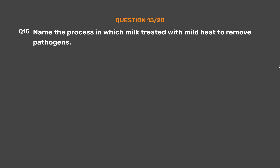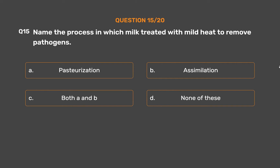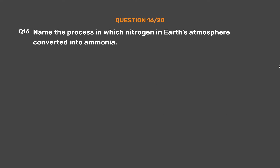Question number 15. Name the process in which milk is treated with mild heat to remove pathogens. Option A: Pasteurization. Option B: Assimilation. Option C: Both A and B. Option D: None of these. The correct answer is Option A, Pasteurization. Pasteurization is a process in which packaged and non-packaged foods, such as milk and fruit juice, are treated with mild heat — usually less than 100°C (212°F) — to eliminate pathogens and extend shelf life.